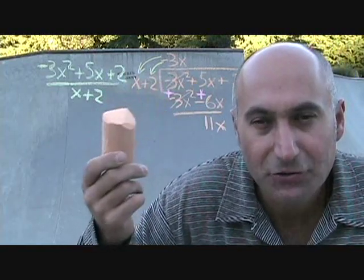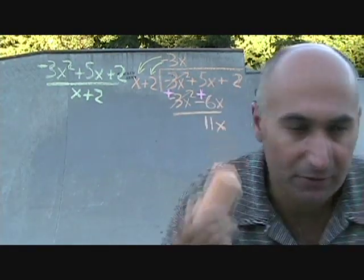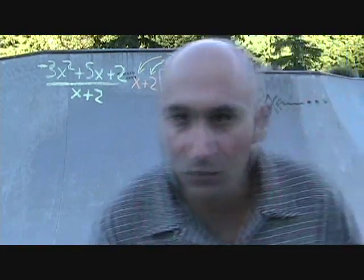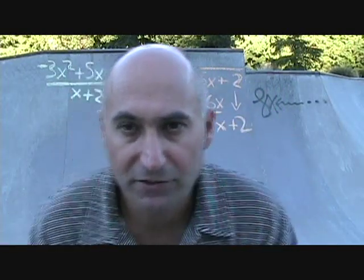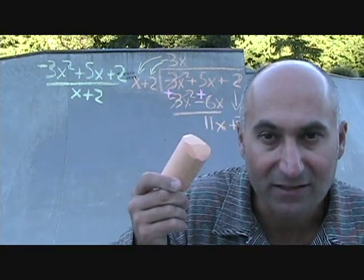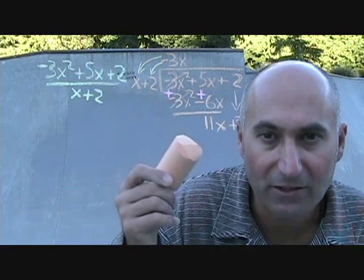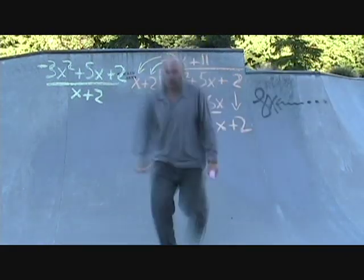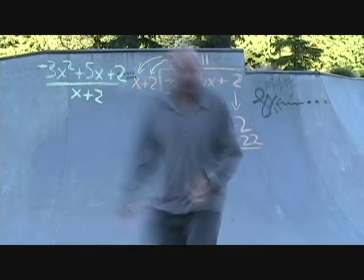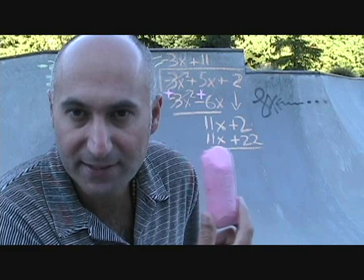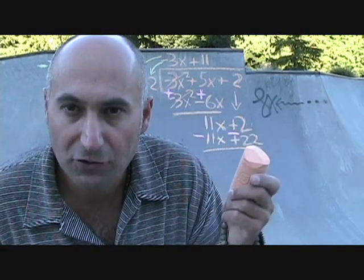The x squared terms cancel, leaving 11x. Bring down the positive 2. Now what do you multiply x by to give you 11x? Multiply by 11. So 11 times x is 11x, and 11 times 2 is 22. Change the signs and add, giving negative 11x minus 22. Then 11x minus 11x cancel, and 2 minus 22 is negative 20. That's our remainder.